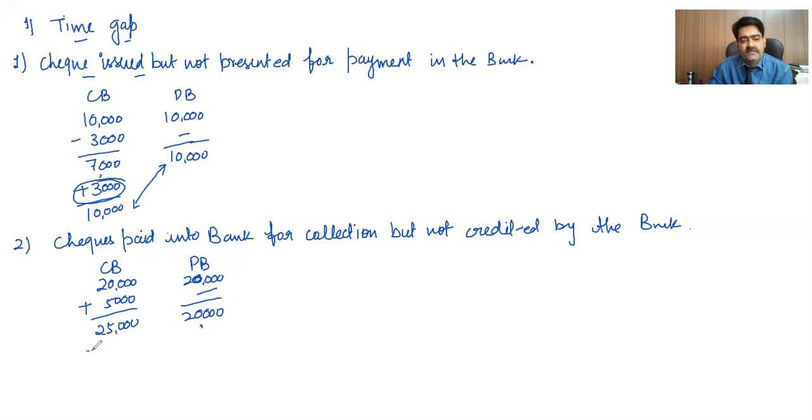So now see how we can remove this difference. We can remove this difference by deducting 5000 rupees in our cash book balance, so that both balances will be equal.